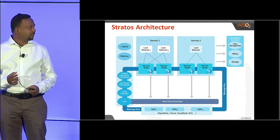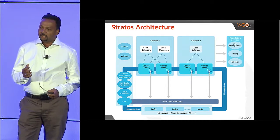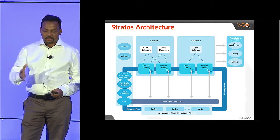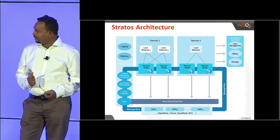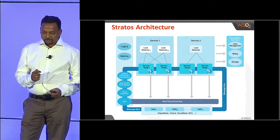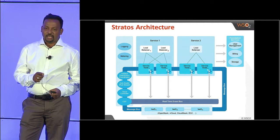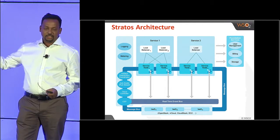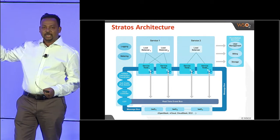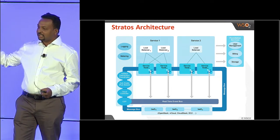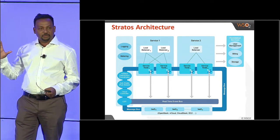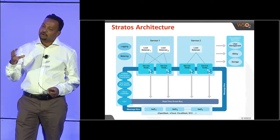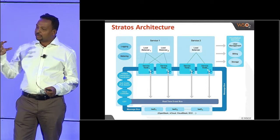This is the architecture of Apache Stratos, designed by the community after it was donated — the latest and greatest architecture. One of the key aspects is that we have a message bus which connects all the elements in the infrastructure. It loosely couples the elements in the architecture and uses the message bus to adhere to a pub-sub model of communication, so that it allows components to be added and removed.